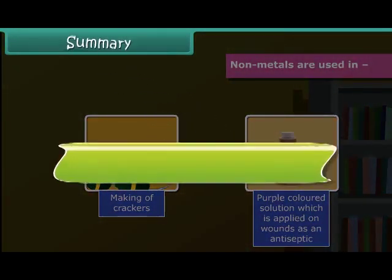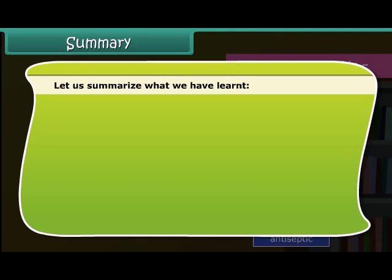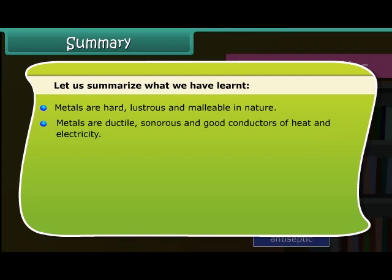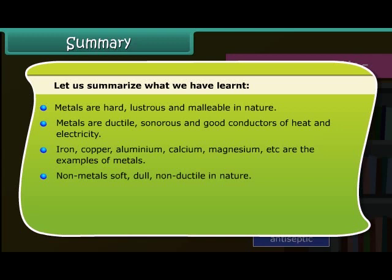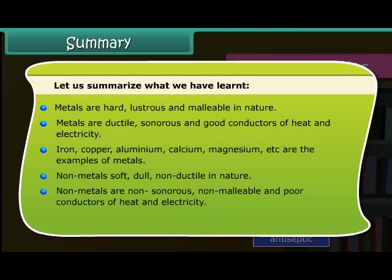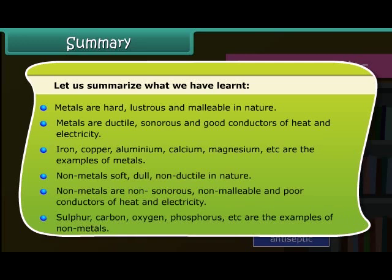Let us summarize what we have learnt. Metals are hard, lustrous, malleable, ductile, sonorous, and good conductors of heat and electricity. Iron, copper, aluminium, calcium, magnesium, etc. are examples of metals. Non-metals are soft, dull, non-ductile, non-sonorous, non-malleable, and poor conductors of heat and electricity. Sulfur, carbon, oxygen, phosphorus, etc. are examples of non-metals.